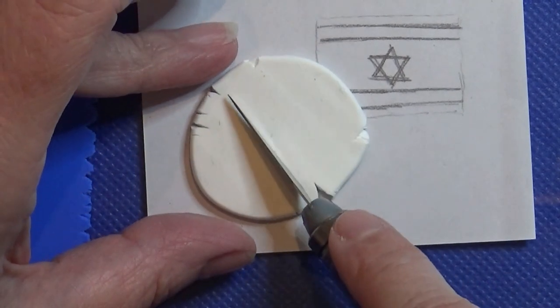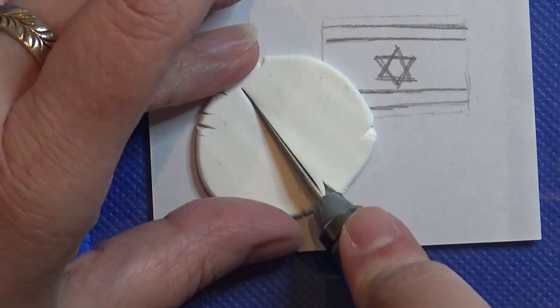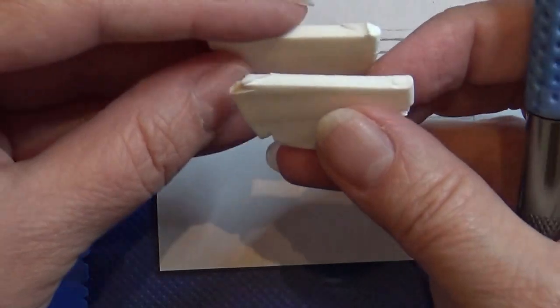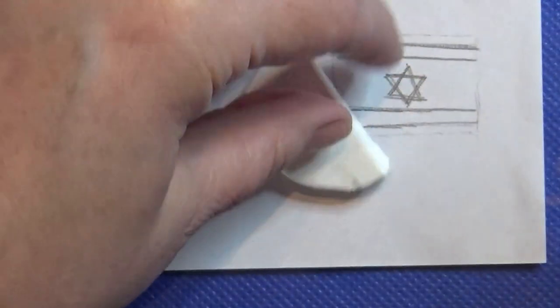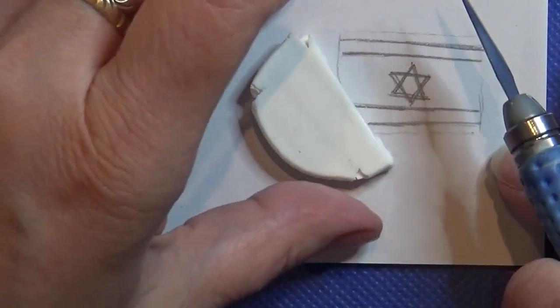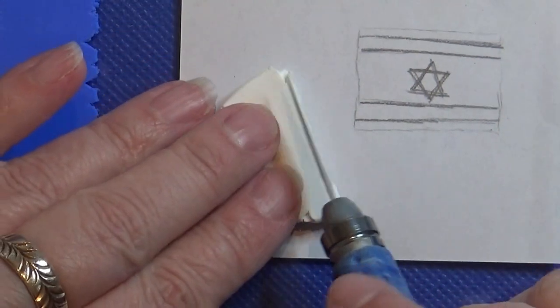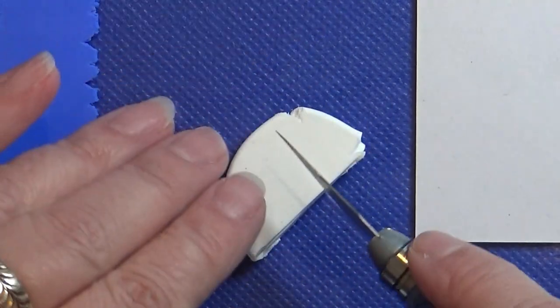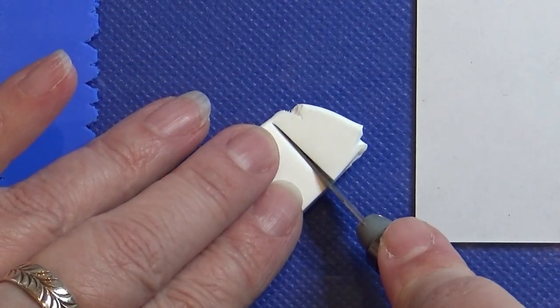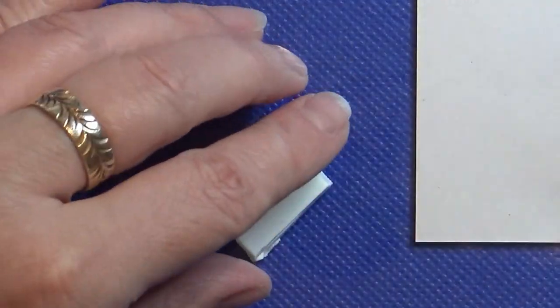I rolled out a piece of clay on my thickest setting on my pasta machine and I'm actually going to put it double as we are building a cane here and it's easier to work with if it's a bit thicker. I'm going to make the star that is the centerpiece of this flag and this was a bit tricky so please just watch what I'm doing here.